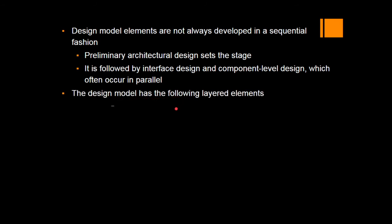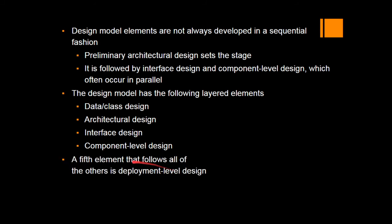The design model has the following layered elements: data class design, architectural design, interface design, component level design, and finally deployment level design. Data class design is all about the functionality — what data is going to be used and what the data structure is. Architecture gives the framework of how components are going to be placed inside the framework. Interface design covers what interfaces the components are going to use to communicate with one another, how many communication lines are possible, when they communicate, and what they communicate. Component level design covers how the components are developed, and deployment level design addresses how deployment is going to be done — whether in the user's machine or at some other level.